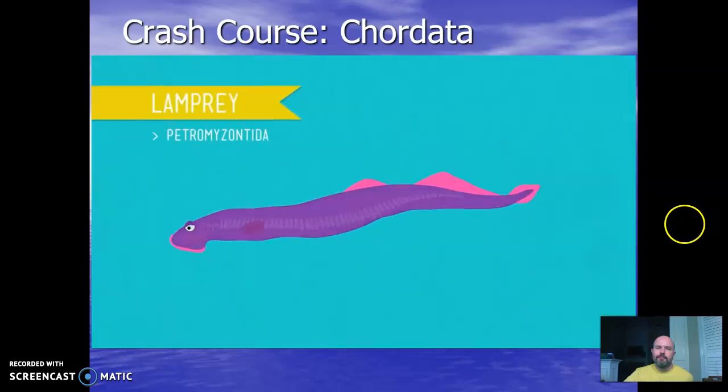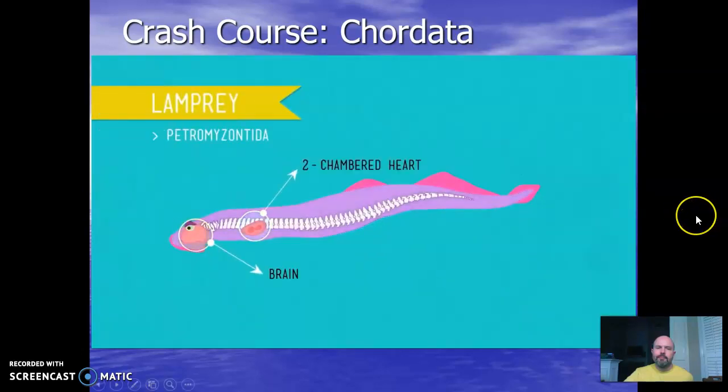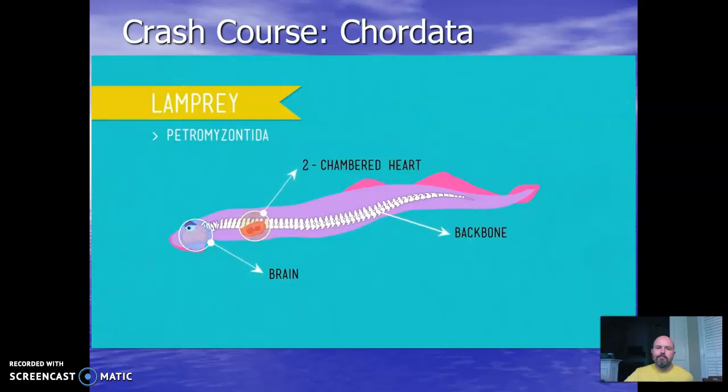Closely related to hagfish is the class Petromyzontida, otherwise known as lampreys — the oldest living lineage of vertebrates. These have a backbone made of cartilage and a more complex nervous system. With the advent of the backbone, we see vertebrates getting larger, developing more complex skeletons, and becoming more effective at catching food and avoiding predators.